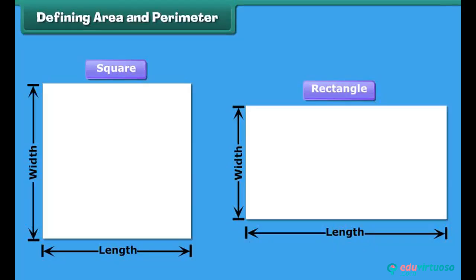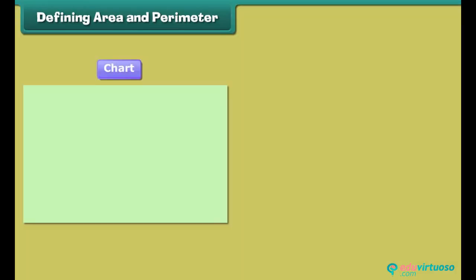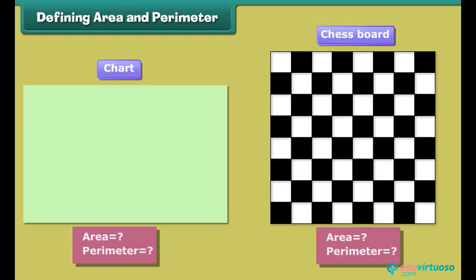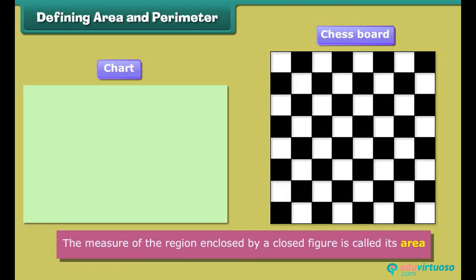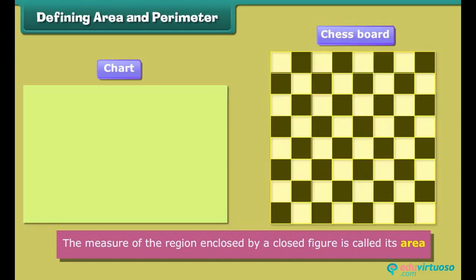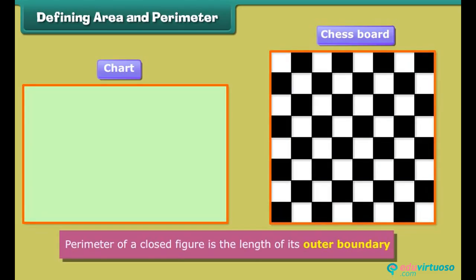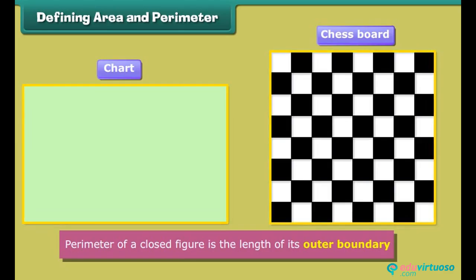We already know about closed figures like squares and rectangles. For example, this chart paper is a rectangular chart, while the chessboard is a square. The measure of the region enclosed by a closed figure is called its area. Perimeter of a closed figure is the length of its outer boundary. Let us now find the ways of calculating area and perimeter of rectangles and squares.